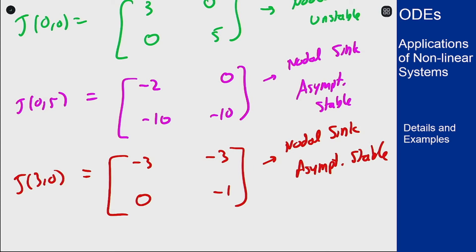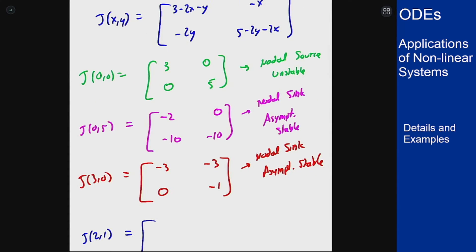And then finally the point in the middle at 2 comma 1 which comes out to be 3 minus 4 minus 1 is negative 2, negative 2 that's negative 2. 5 minus 2 minus 2 minus 4 which is negative 1. We can look for eigenvalues and eigenvectors here. It's not triangular so it's not super easy we can still do it.